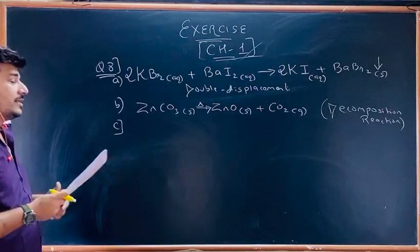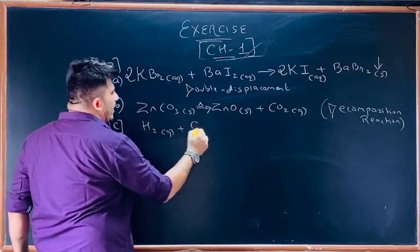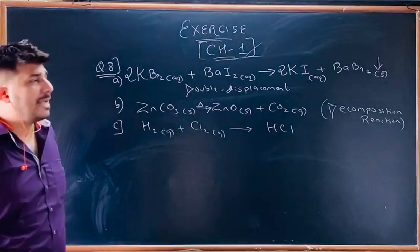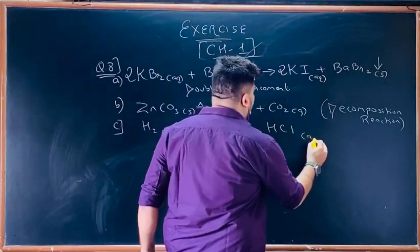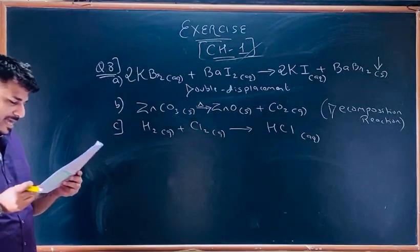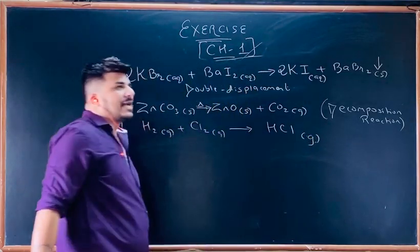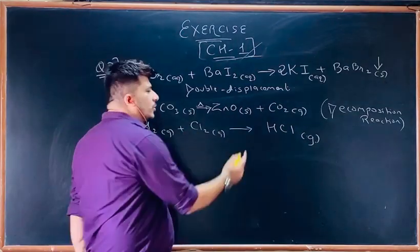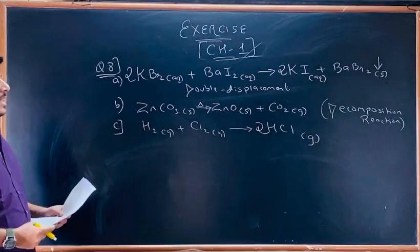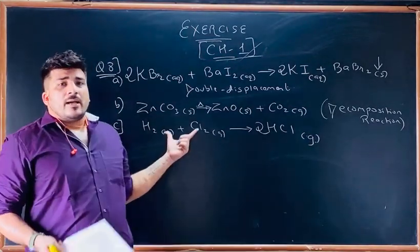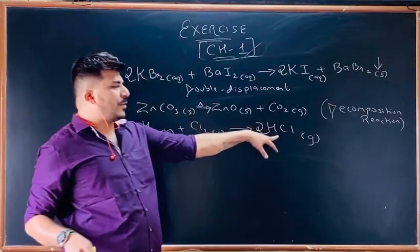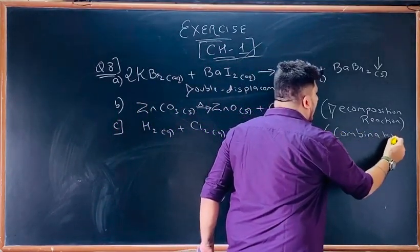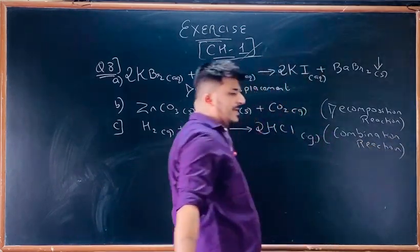Third (c): H₂ (gas) + Cl₂ (gas) → 2HCl (gas). Hydrogen chloride's chemical name is also hydrochloric acid — in aqueous medium it is HCl(aq), in gas form it is HCl(g). Balancing: H₂ gives 2H and Cl₂ gives 2Cl — so 2HCl is the product, balanced. Two molecules combined to give one product — so this reaction is a combination reaction.